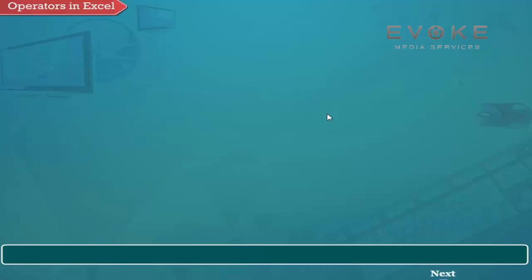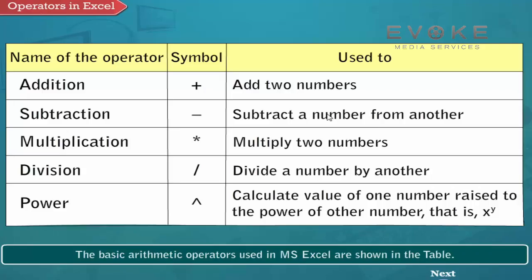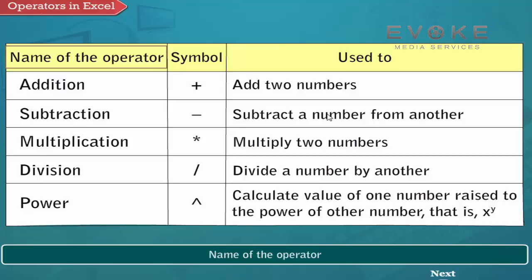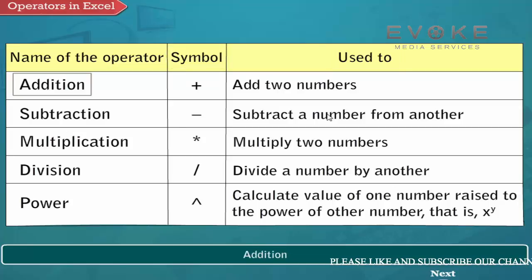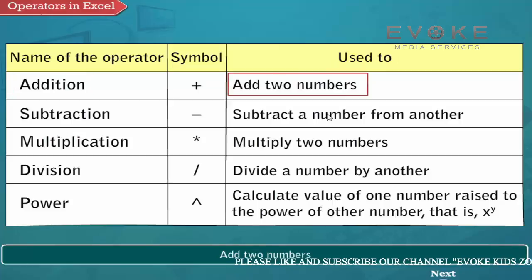Operators in Excel. The basic arithmetic operators used in MS Excel are shown in the table. Name of the operator, symbol, used to. Addition: add two numbers.